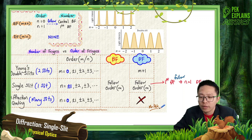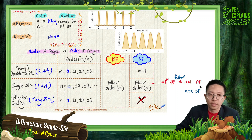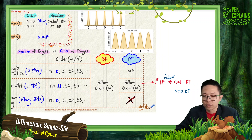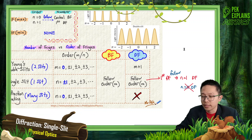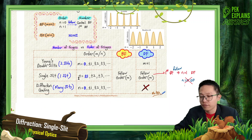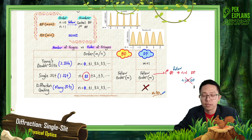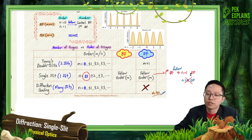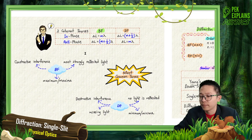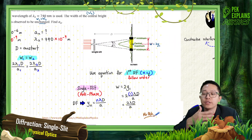It doesn't have zero order dark fringe — for single slit it starts from 1. The first dark fringe is first order. Follow order means the first dark fringe is the first order dark fringe, so you should put N equal to 1. The first dark fringe, which is just beside the central bright fringe, is the first order dark fringe.